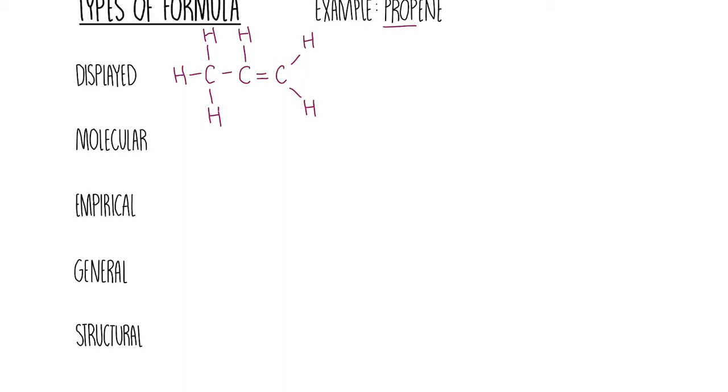The molecular formula tells you how many carbons and hydrogens you have, how many atoms are actually in the molecule. We can just group them all together. We're just going to write C3H6. We've got three carbons and six hydrogens.